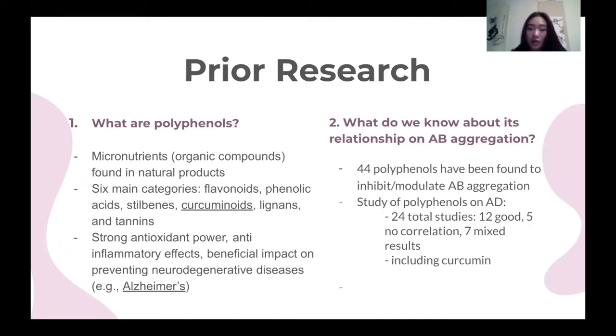Furthermore, an article by NIH analyzed 24 studies, two of which were on curcumin, the polyphenol we're using in our project, and supports a potential positive effect on reducing amyloid beta aggregation.